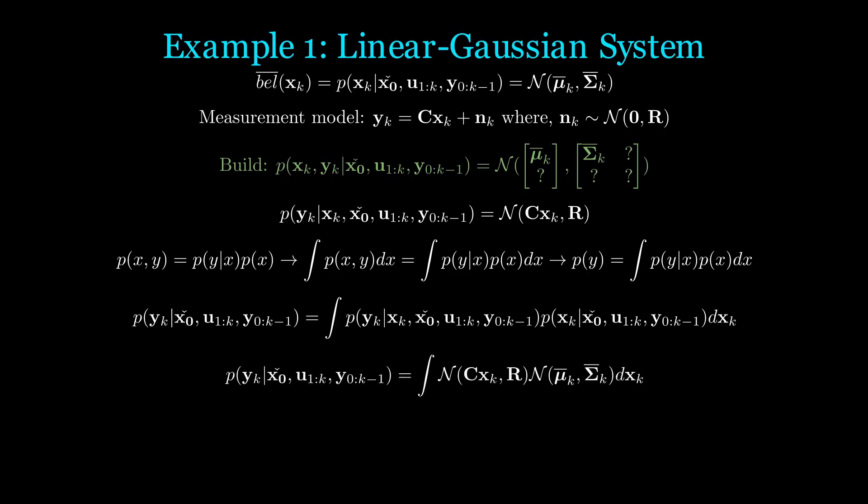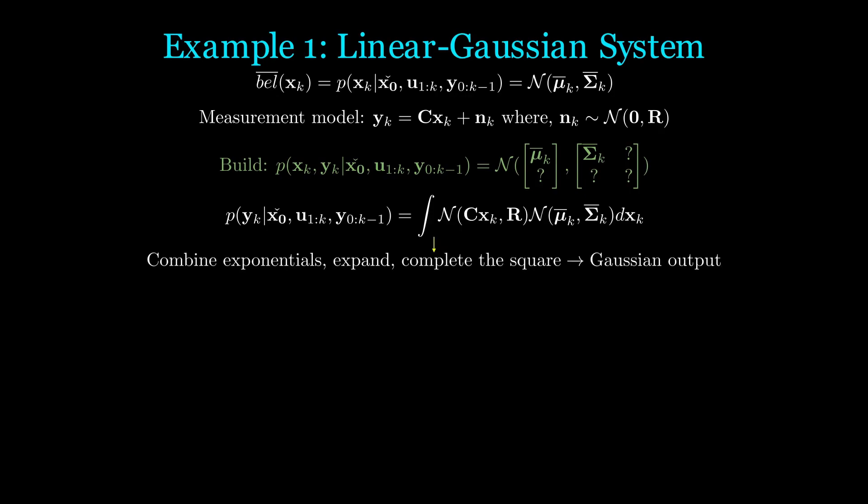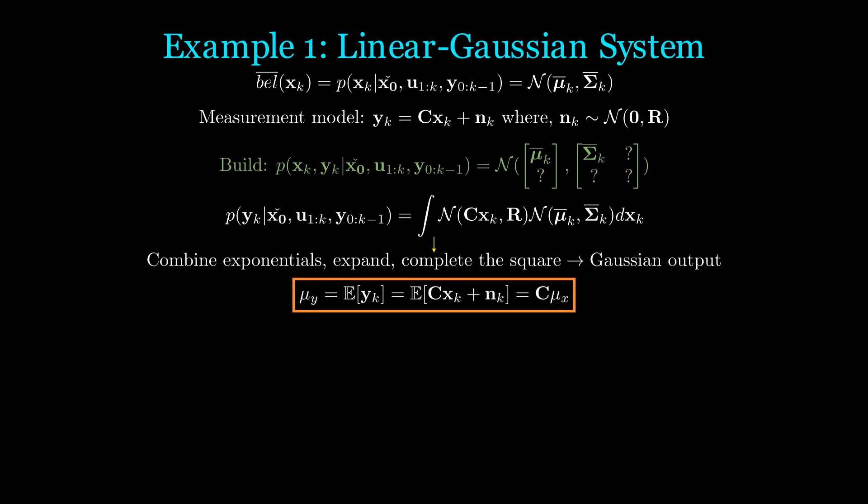which is just the integral of two Gaussians. We can indeed go through all the math, but I will tell you now that the result is indeed a Gaussian. And only because we know it is a Gaussian, we can compute the mean and covariance of the Gaussian by just taking expectations. μ_y is simply C times μ_x. For Σ_yy, we start from the definition.